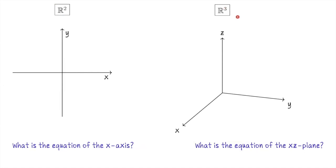Let's keep looking at these two spaces, R2 on the left and R3 on the right. What I'd like to point out is that the set of points which satisfy an equation might be a different set of points depending on which space you're working in. In R2, what is the equation of the x-axis? Every point along the x-axis has y-coordinate zero, so the equation of the x-axis in R2 is simply y equals zero.